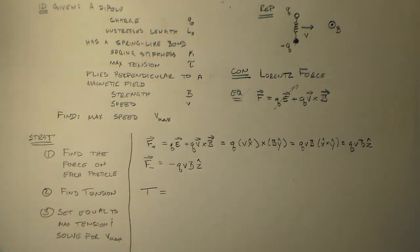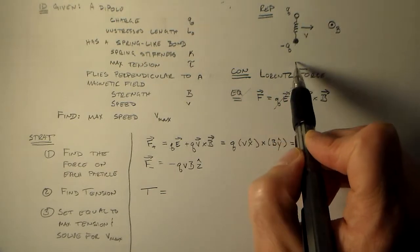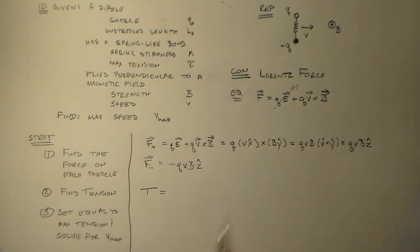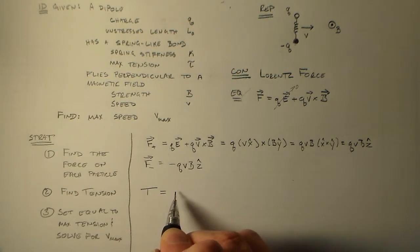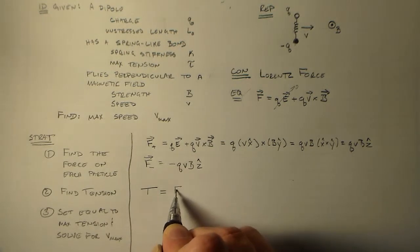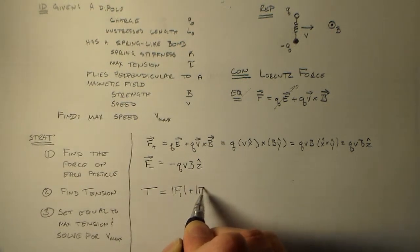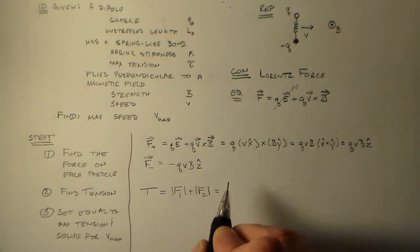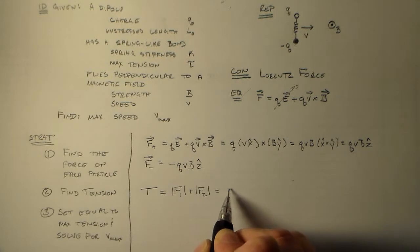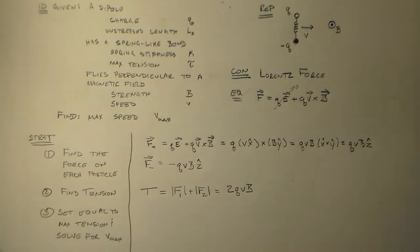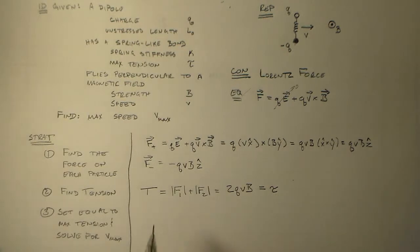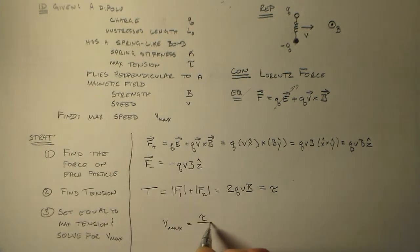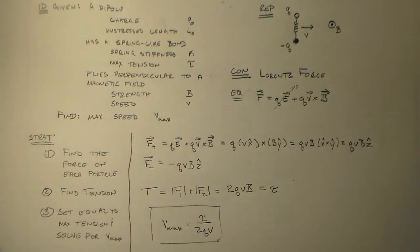The tension is going to be equal to basically the force pulling that way and the force pulling that way. It's a tensor value thing in there. So that's going to be F1 plus F2. Because this one's going out and that one's going out, so they add up. We end up with 2QVB as our tension, right? And we're going to set that equal to our maximum tension. And then we solve for V, right? So V max is equal to tau over 2QB.